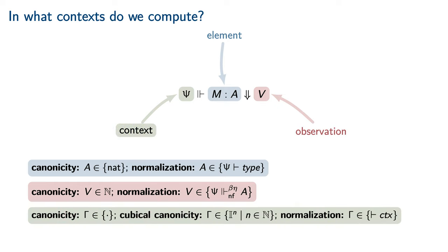Canonicity results compute only in restricted contexts, such as the empty context only for closed canonicity, or contexts that are powers of the interval for cubical canonicity. On the other hand, a normalization result must compute in arbitrary contexts.